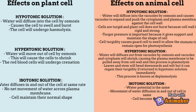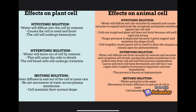When a red blood cell is placed in a hypertonic solution, water will move out of the cell by osmosis, causing the cells to shrink. The red blood cells are said to undergo crenation and become crenated. Lastly, in an isotonic solution, water diffuses in and out of the cell by osmosis at the same rate, so there is no net movement of water across the plasma membrane and the cells maintain their normal shape.